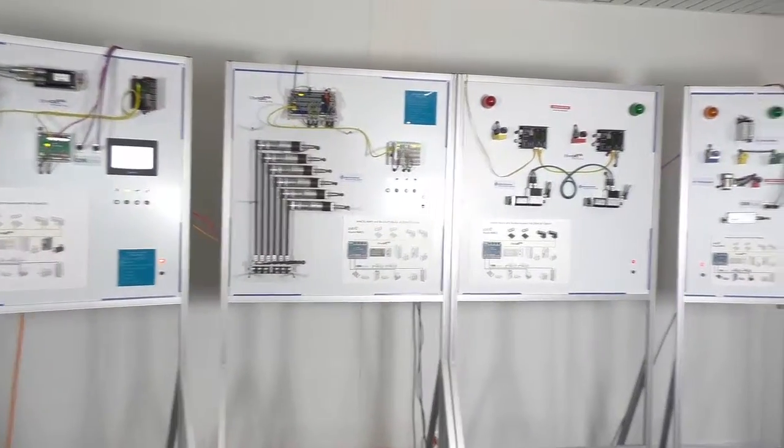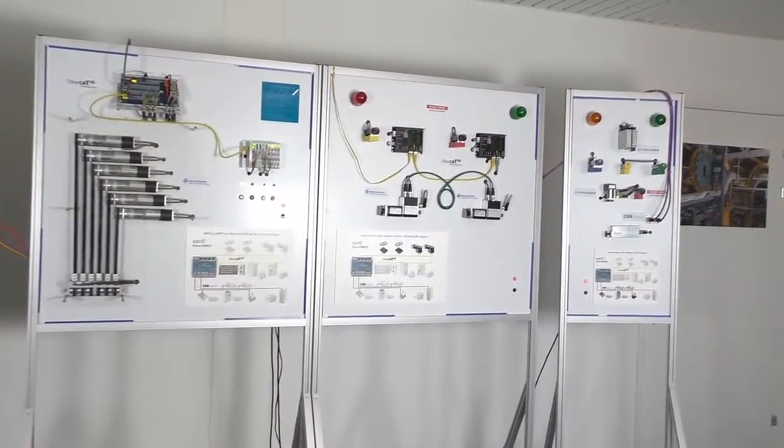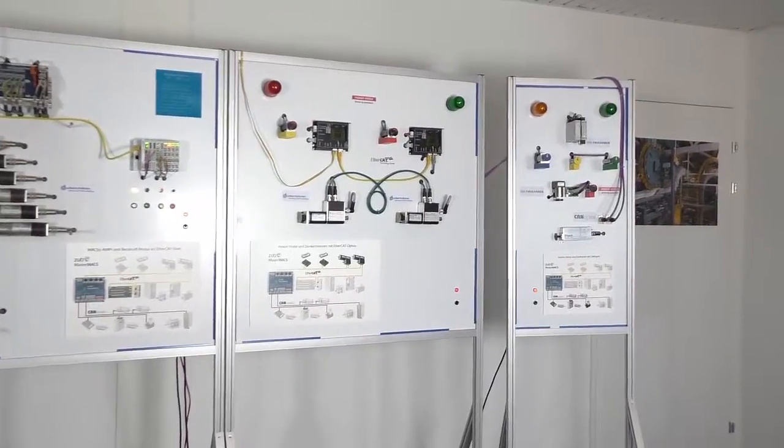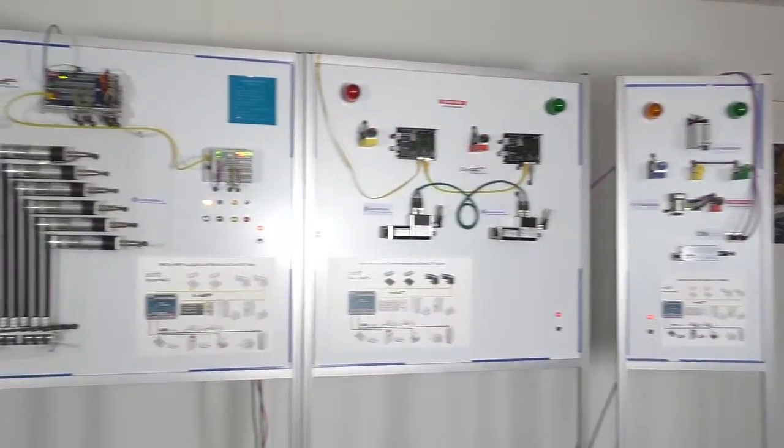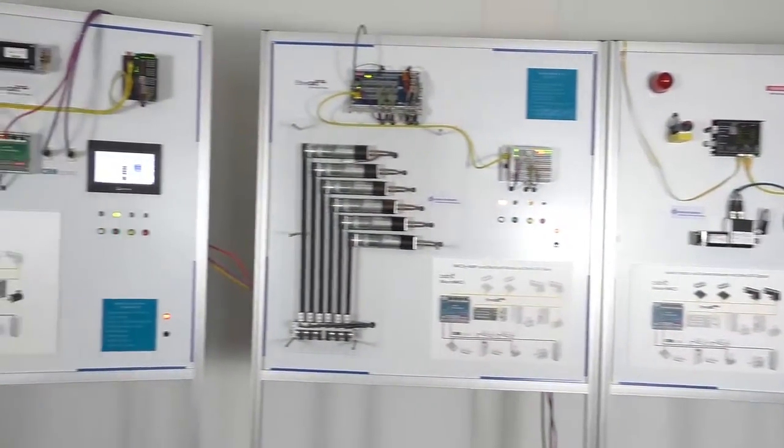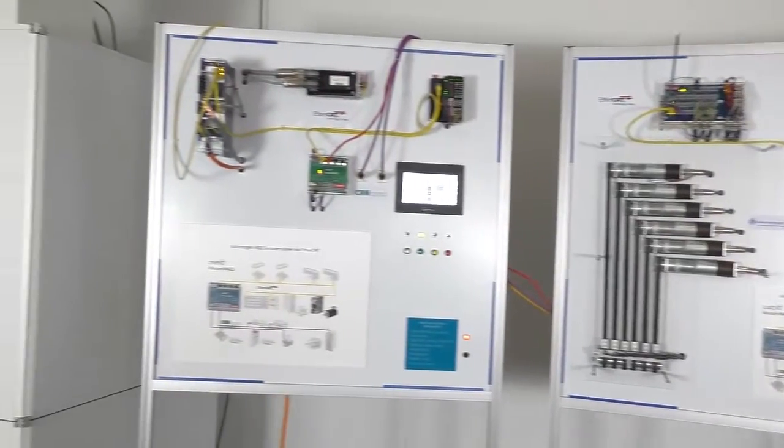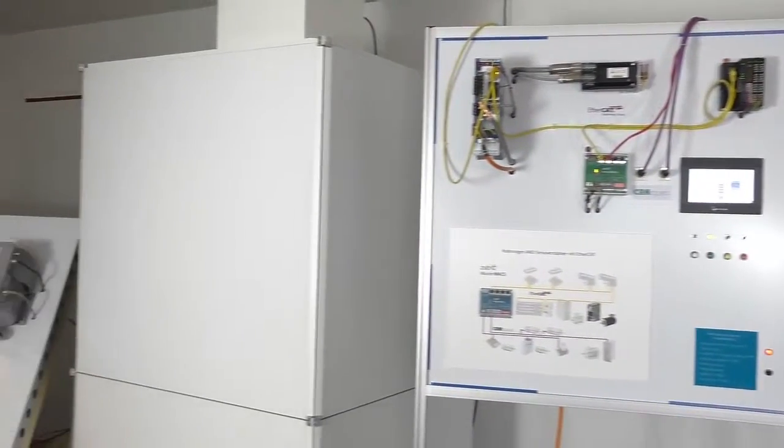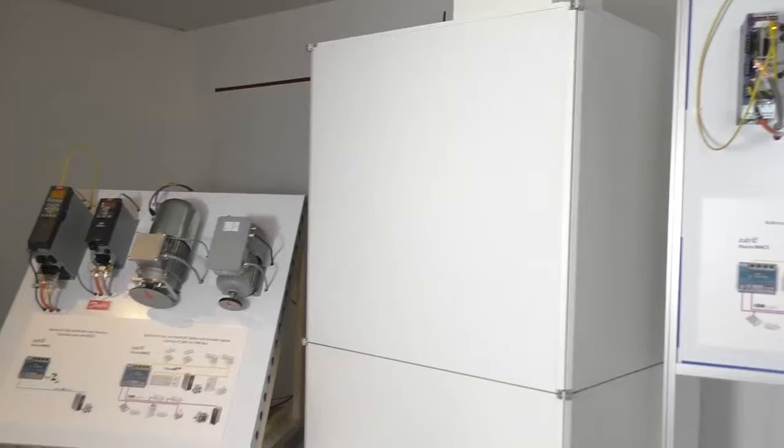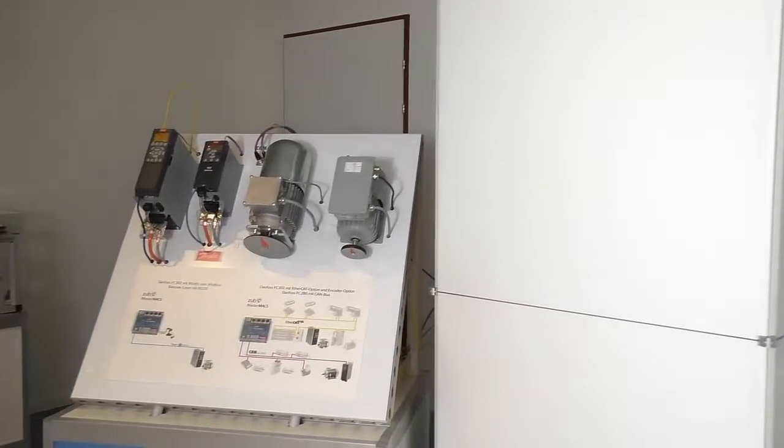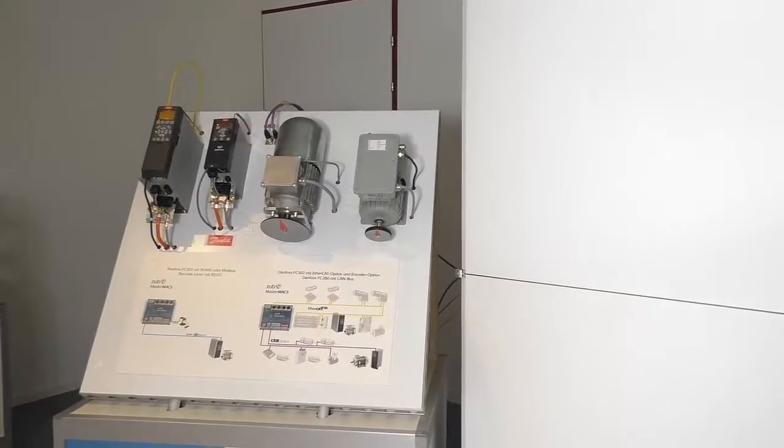Today we want to demonstrate the multi-axis capabilities of the ZUB MasterMax. The MasterMax is able to control up to 32 axes in jerk limited movements or even in cam curve interpolation mode. You can see an overview of the architecture on the picture coming next.